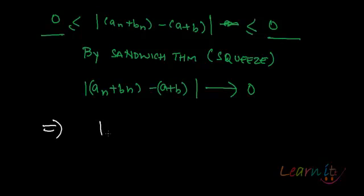So which implies that the sequence An plus Bn actually tends to, sorry, not 0 of course, A plus B. They tend to A plus B. So what do I have? So it is proved there.